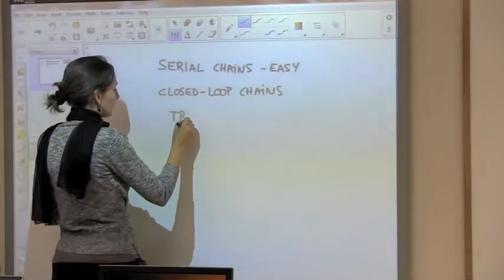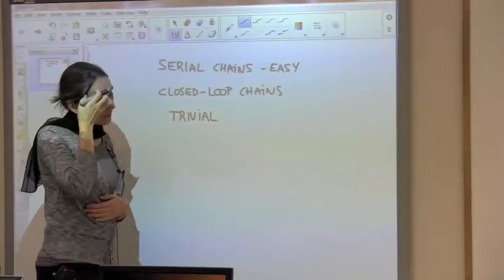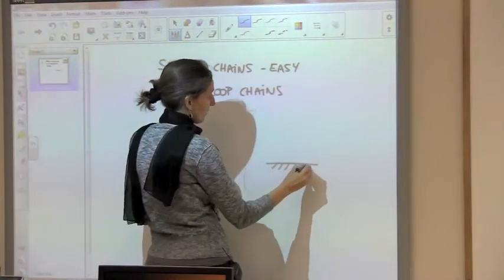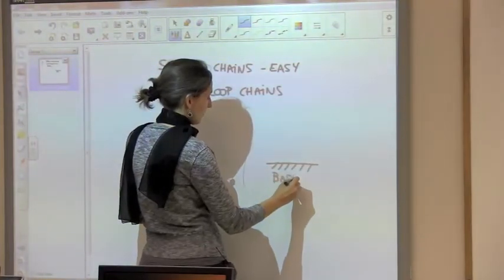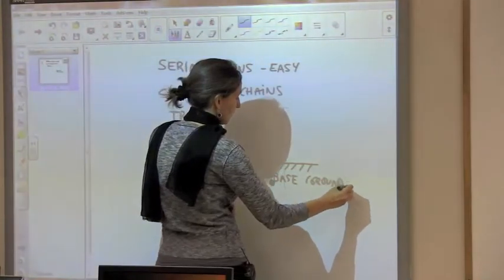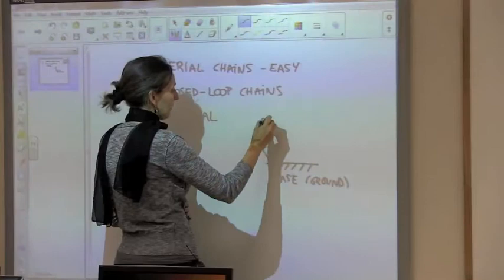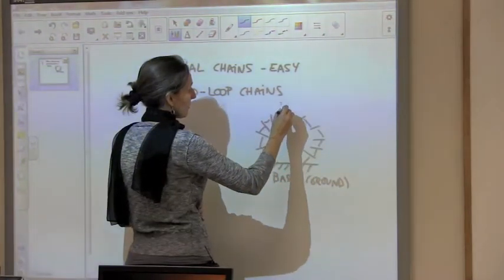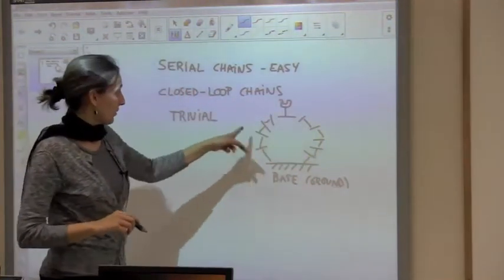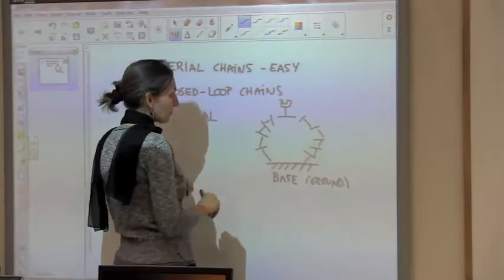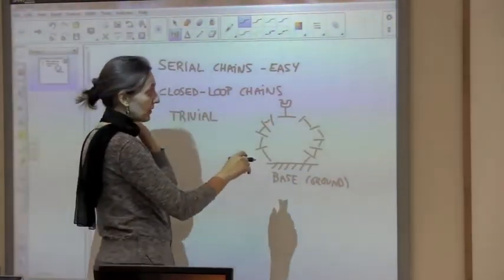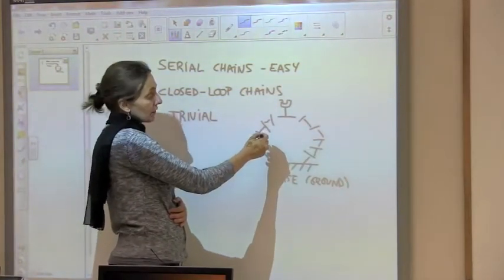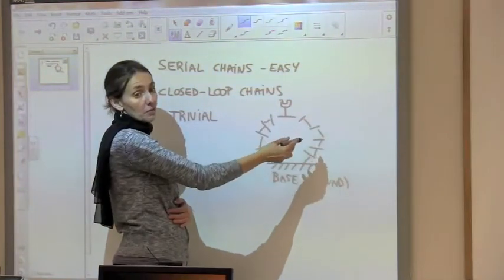There are ones that are trivial. The trivial closed-loop chains are those where you have your base, two legs with however many joints you want, and an end effector — so this forms a loop with two paths. A trivial closed-loop chain is one where the subspace of motions of one path is either the same as, or fully contained within, the subspace of the other.